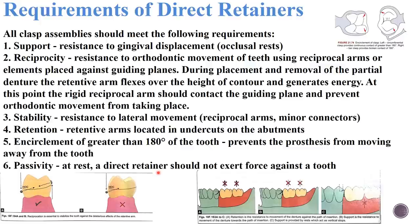Encirclement of greater than 180 degrees of the tooth prevents the prosthesis from moving away from the tooth. As seen in the diagram, the clasp encircles the tooth at 180 degrees, preventing the prosthesis from moving away and ensuring good engagement all around the tooth.